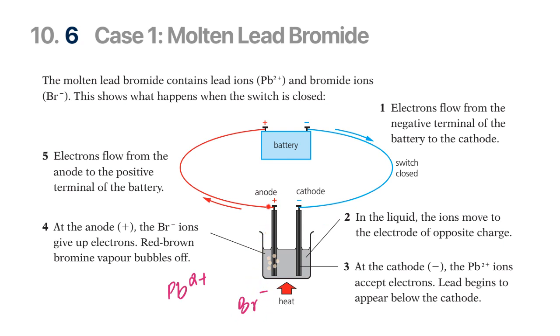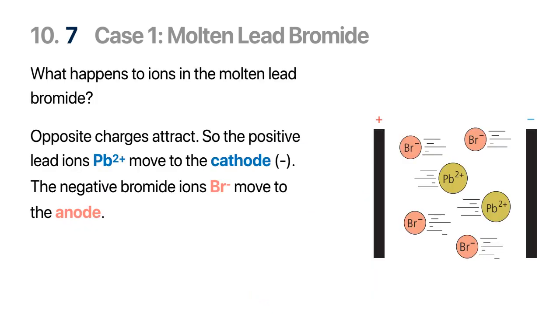Here we take a closer look at what's happening in the solution. Bromine ions are being attracted to the positively charged anode and the lead ions with the positive charge are being attracted to the negative terminal, namely the cathode. And once they reach there they start reacting. Let's see how they react.